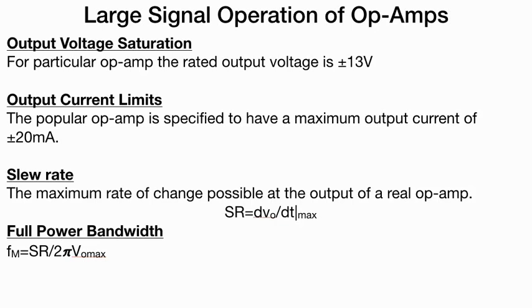Large signal operation of op-amps. The voltage saturation we consider to be plus minus 13 volts or plus minus 15 volts, it varies. The output current limit is plus minus 20 milliampere.